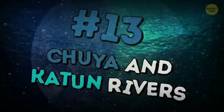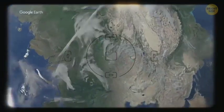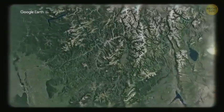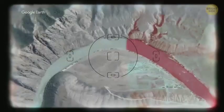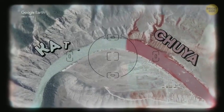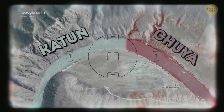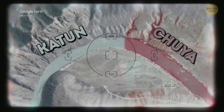Chuya and Katun rivers meet in the Altai Republic, Russia. The water of the Chuya has an unusual cloudy white color here and looks dense and thick. Katun is clean and turquoise. Flowing into each other, they form a single, two-colored flow that does not mix for some time.